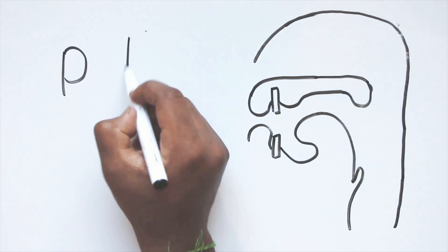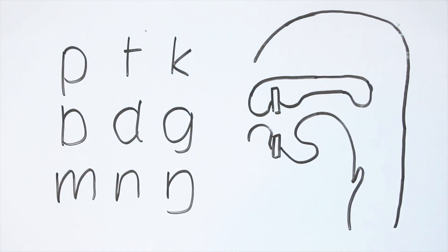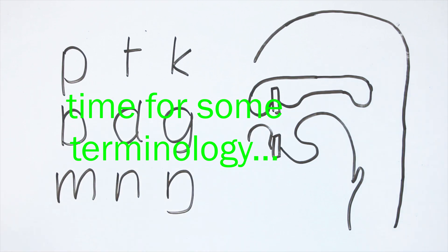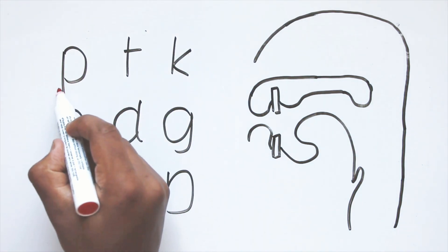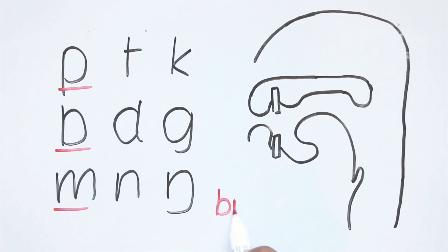So far we know about these nine sounds. If you want a quick recap, take a look at the introduction to linguistics on this channel. Time to introduce some terminology. The p, b and n are all bilabial since their point of articulation is the two lips. Bilabial.